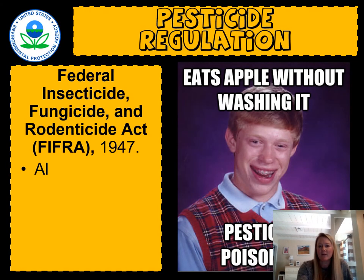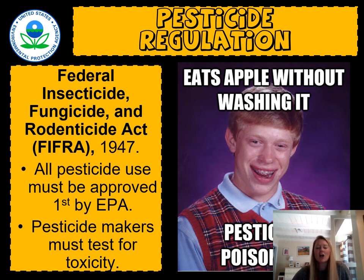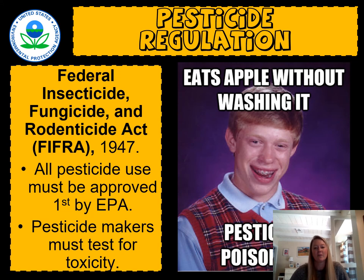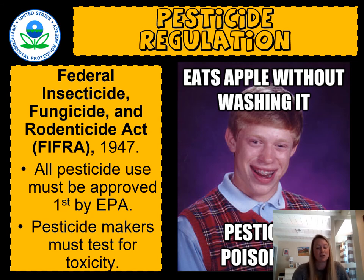The federal government was concerned about pesticide usage on our farms and specifically human consumption of those pesticides. So a law was created called FIFRA — the Federal Insecticide, Fungicide, and Rodenticide Act. What it says is that if you create a pesticide and use it, you have to get approval from the EPA, so all pesticide use must be approved by the Environmental Protection Agency. Second, if you create that pesticide, you must run toxicity tests — you have to figure out at what dose it is lethal and at what dose it is safe, and submit that to the federal government.